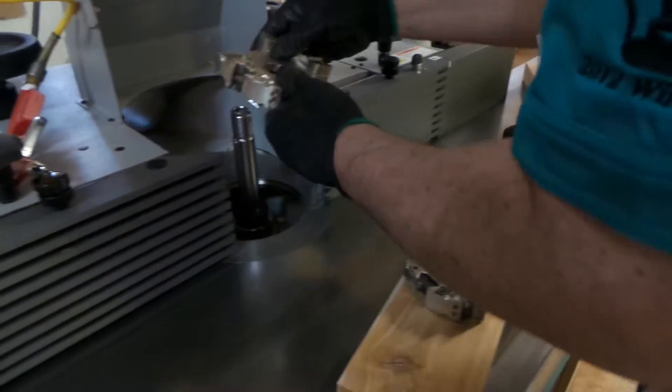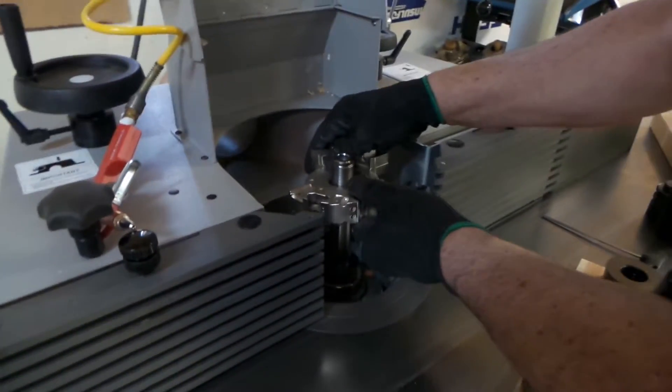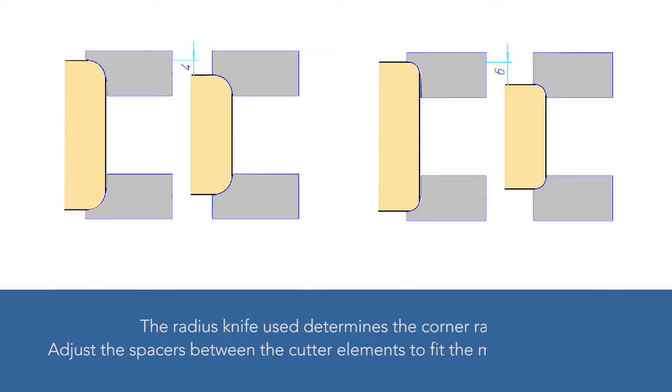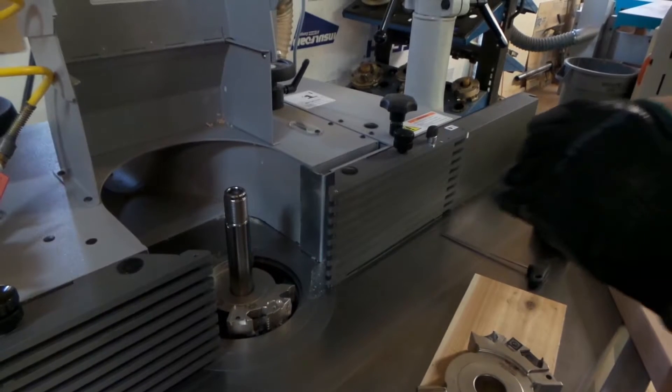Once again this cut takes a little setting up for the first time for whatever thickness you're running, but you can keep track of your shims and write that down and next time you do it it's going to be pretty easy.